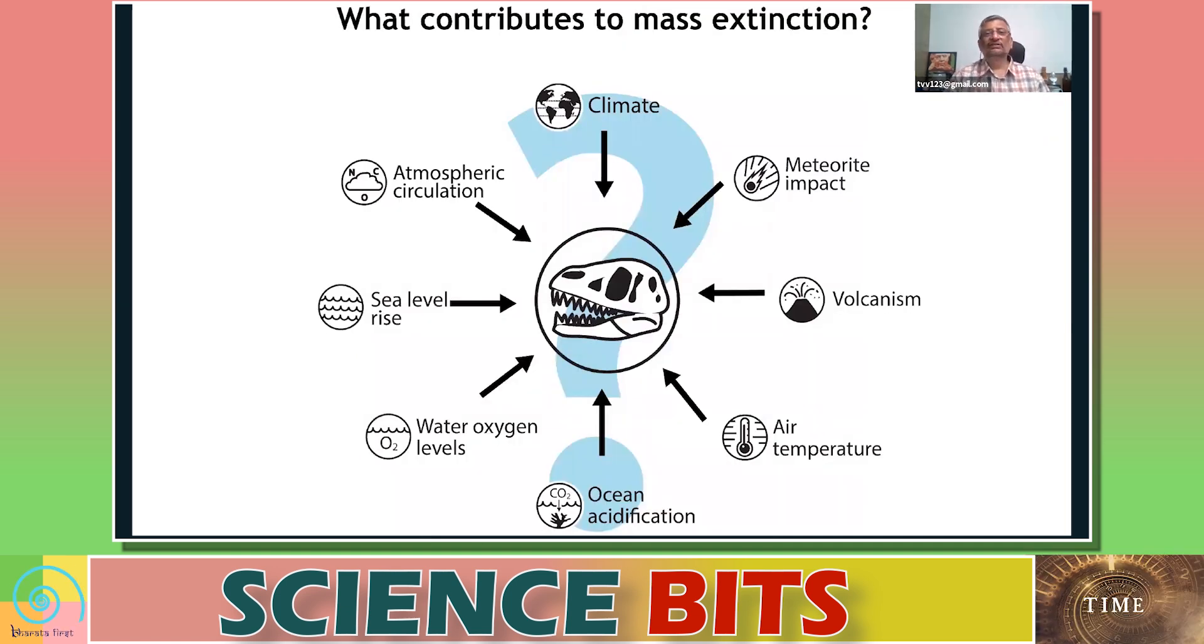So there are various reasons that mass extinction can take place. It can be a meteoroid or asteroid impact, that can be volcanism, large amount of volcanoes, or air temperature changing, ocean acidification, or water oxygen level change, sea level rise, atmospheric circulation, climate - all of this can contribute to mass extinction.